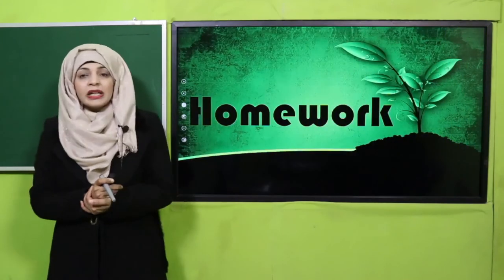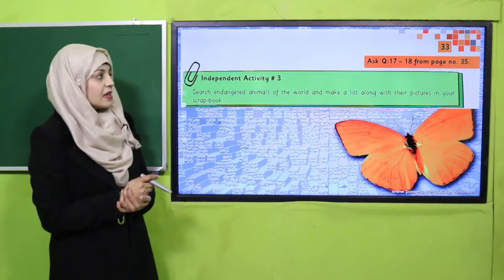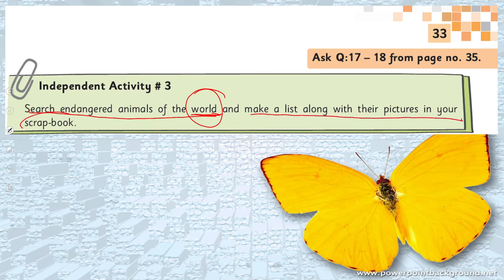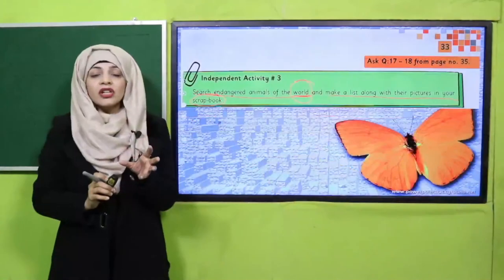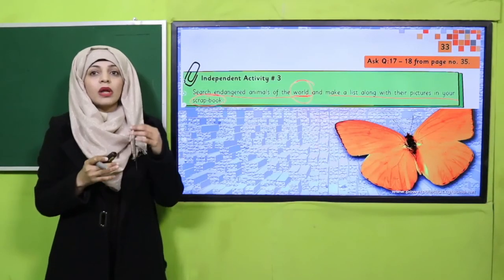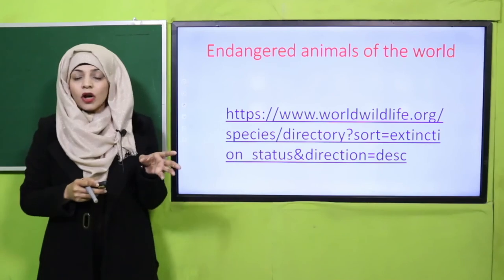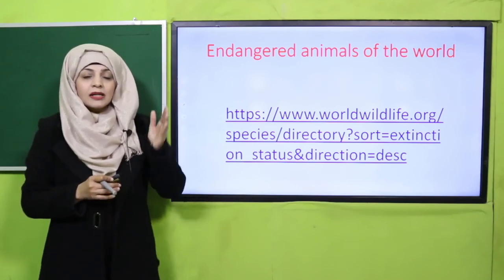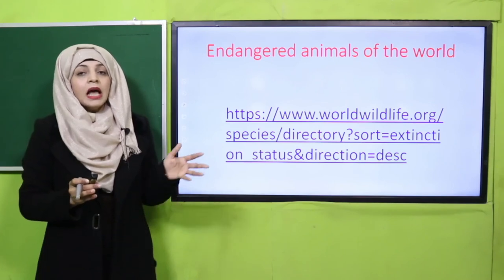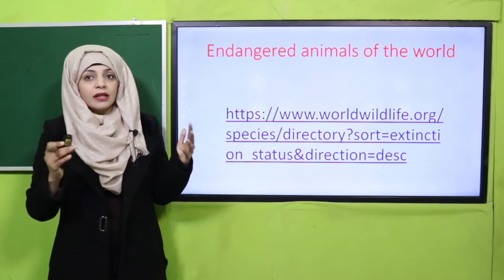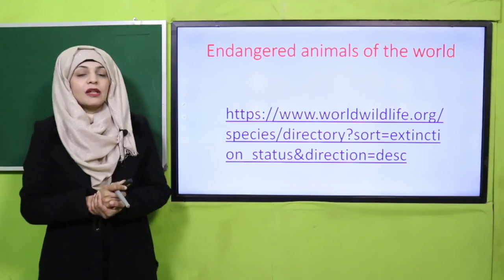My dear students, note down your homework. Independent activity number 3 is given on page number 33. Search for endangered animals of the world — we have discussed Pakistan's endangered animals; now search about the world's endangered animals. Make a list along with their pictures in your scrapbook. You can use the link provided, note down the site, check the list, and paste the pictures in your scrapbook.